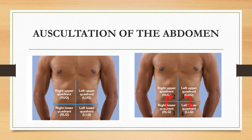In this picture you can clearly see the four quadrants of the abdomen: right upper quadrant, left upper quadrant, right lower quadrant, and left lower quadrant. Whenever you are auscultating the abdomen, start from the right lower quadrant, then to the right upper quadrant, then the left upper quadrant, and finally the left lower quadrant.